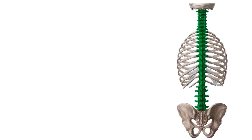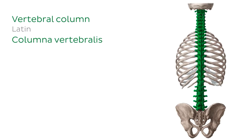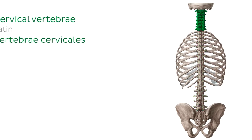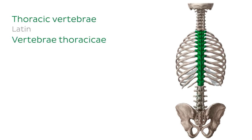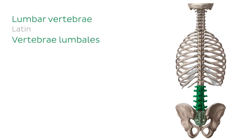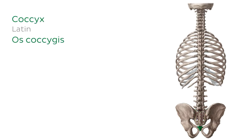Before we start talking about the thoracic and lumbar vertebrae, let me first introduce you to the vertebral column, commonly known as the spine or the backbone. It's made up of five regions: the cervical region, the thoracic region, the lumbar region, the sacral region, and the coccygeal region. And today we'll be focusing on the thoracic and lumbar regions.